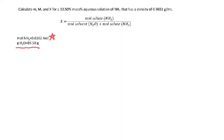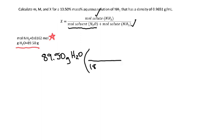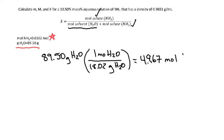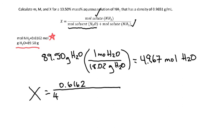We take 89.50 grams of water and convert using the molecular weight — 18.02 grams per mole — giving us 4.967 moles of water. The mole fraction is then 0.6162 divided by (4.967 plus 0.6162), which gives a mole fraction of 0.1104.